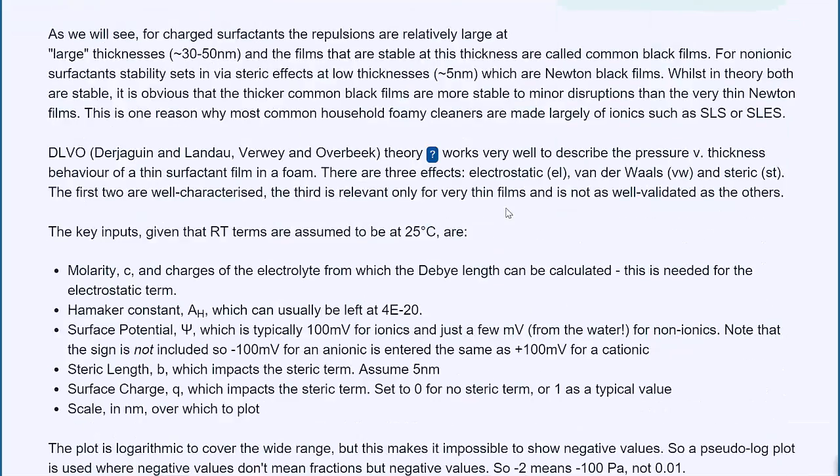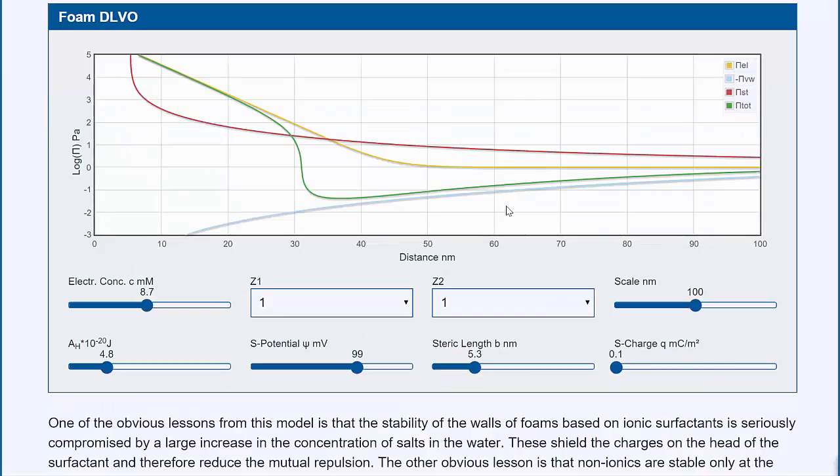Foams can be stabilized by DLVO, and that depends on the concentration of the electrolyte. It depends on the potential of your foam. So, anionic foams tend to be more stable than non-ionic foams, because there's a repellency value. And the DLVO is showing you the net force, which is in green,